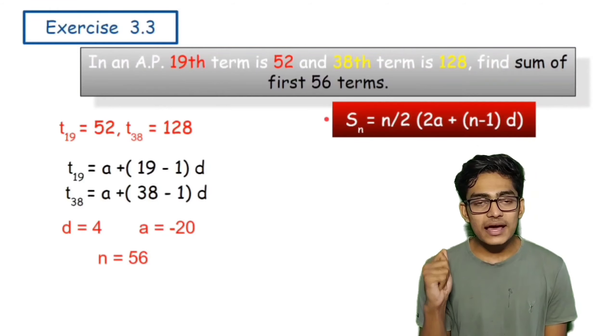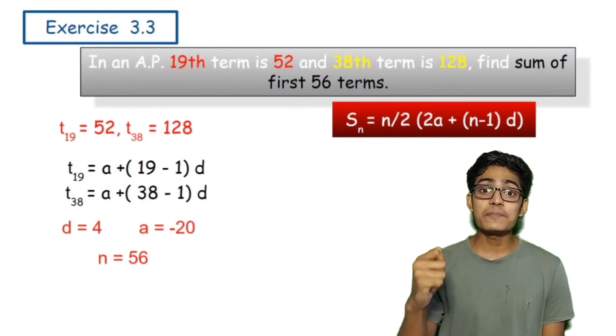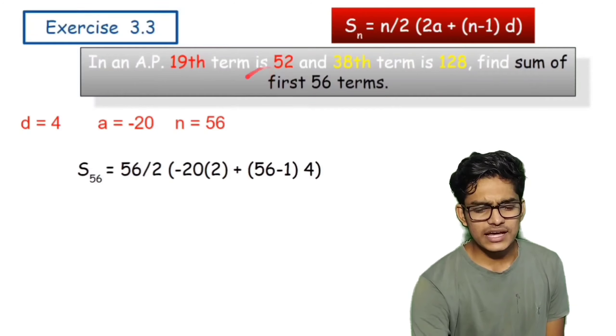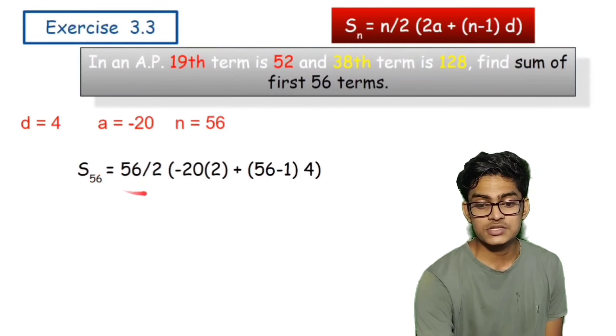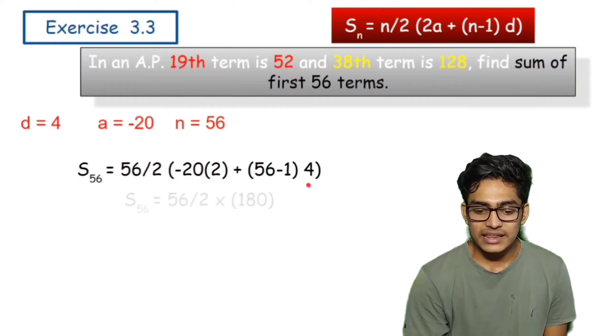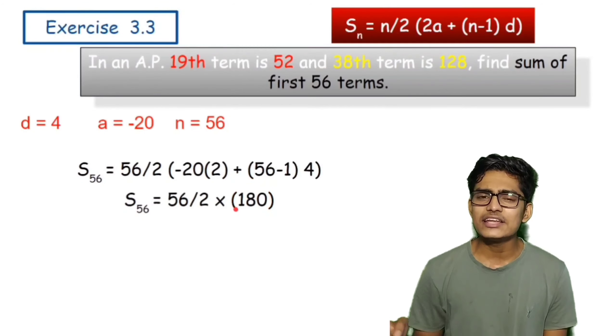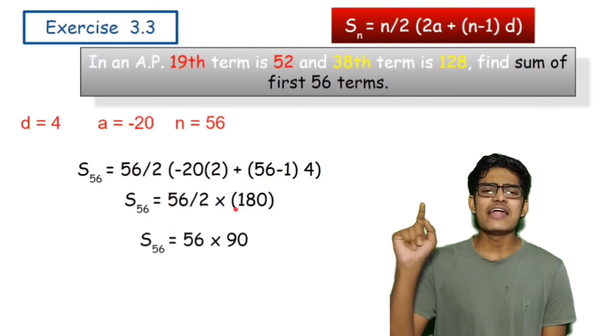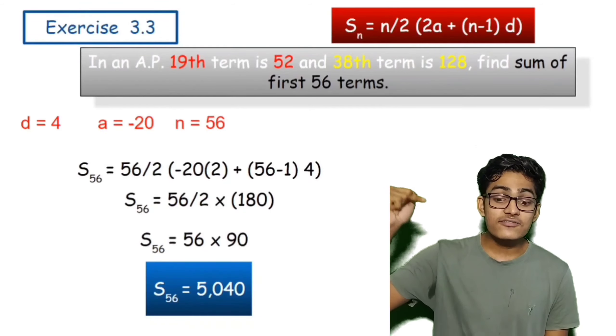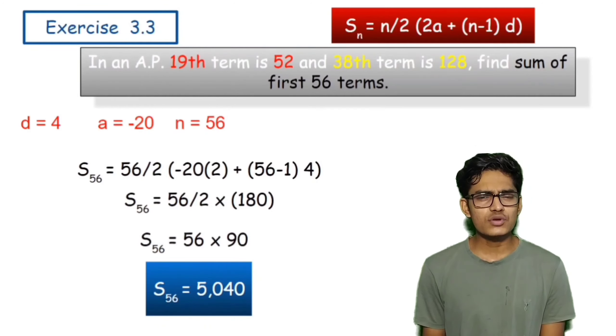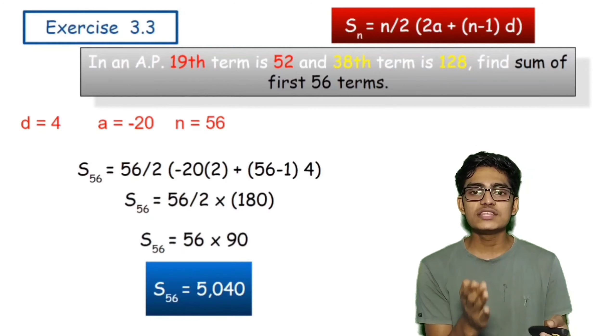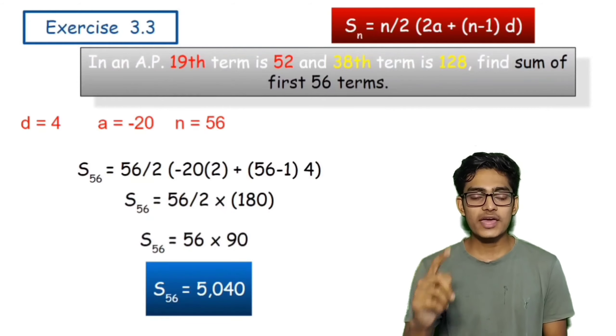We know s_n ka formula is n/2(2a + (n-1)d). So let's quickly substitute the formula. We get our answer like if we substitute for n ka jage 56, substitute for n ka jage 56. We solve the bracket and we get it as 180. 180 ko on log 2 se divide karege we get it as 90 and 56 ko on log 90 se multiply karege to answer aata hai 5040. This is the final answer which y'all are supposed to write. So this was the sum of first 56 terms.